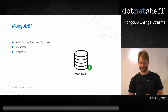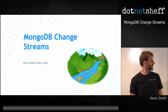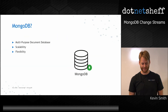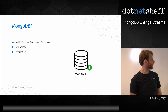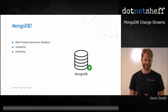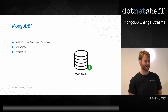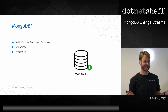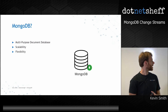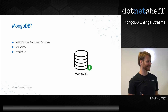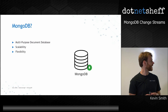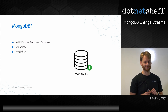My talk is on change streams in MongoDB. For people who don't know what MongoDB is, it's a multi-purpose database, similar to SQL Server or MySQL. The idea is fitting lots of different needs and it can do indexing for better performance, with scalability and flexibility in mind. It can scale horizontally with little effort and it's super flexible for developers to write and ship their code into production.